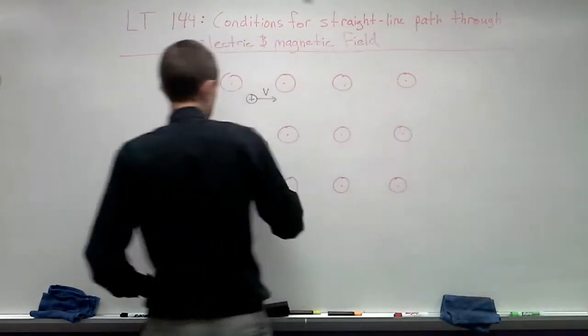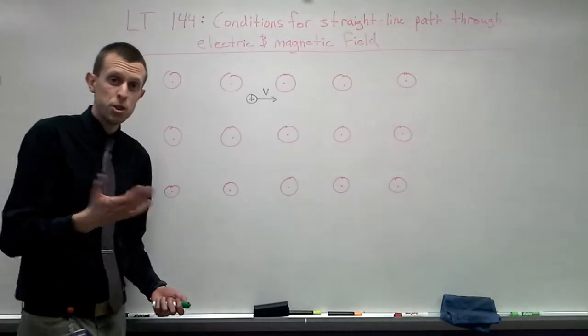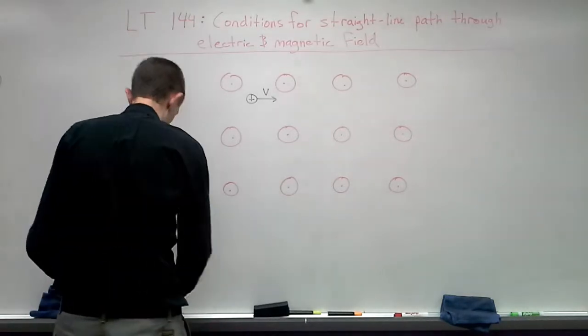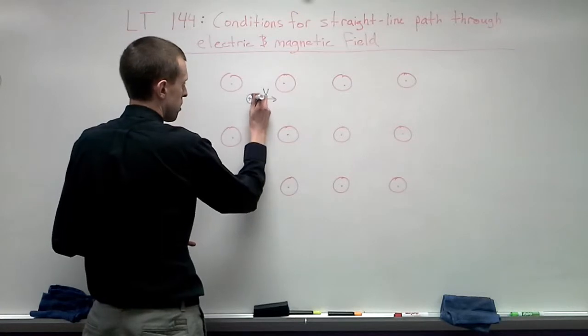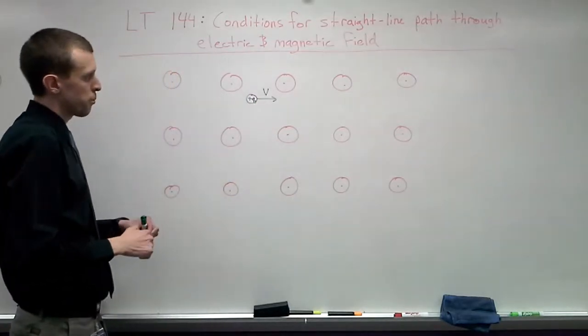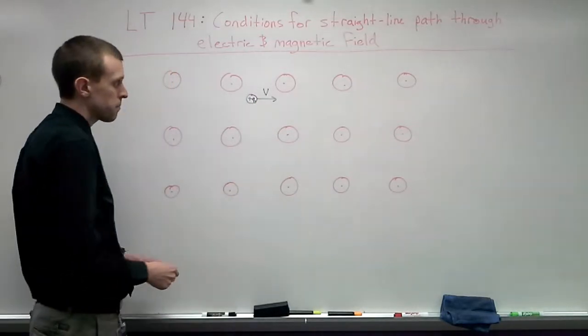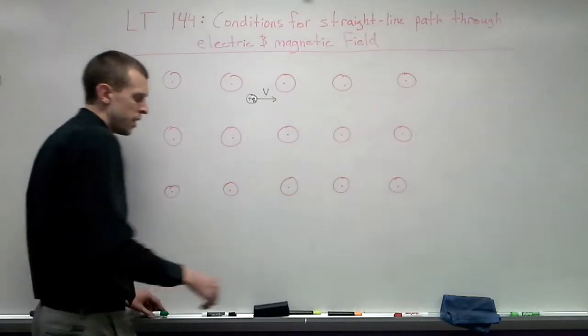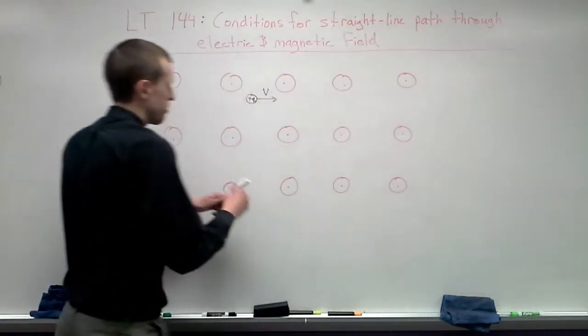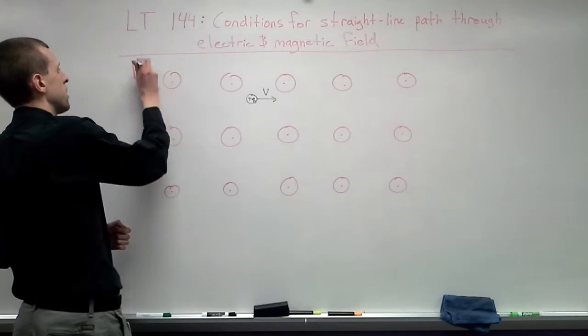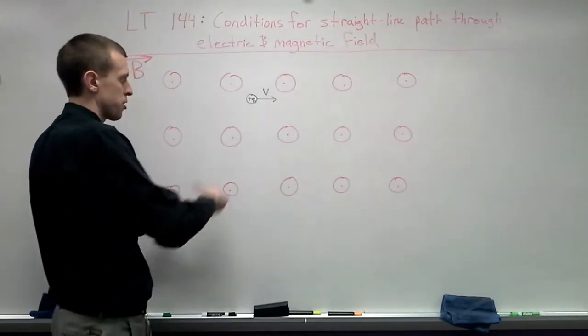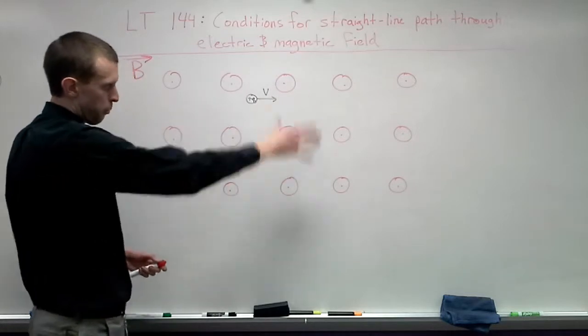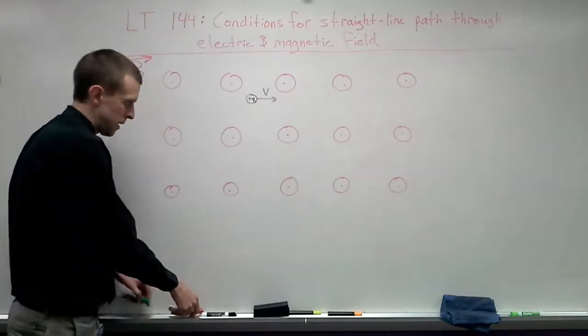So we'll start off with the assumption that we have some positively charged particle with a charge of q that is moving to the right with some velocity v and it's going through this magnetic field. I'm just going to put a note here that the red is going to represent the magnetic field. So everything that's shown here, I've got the charge in black and then the red is for the magnetic field.